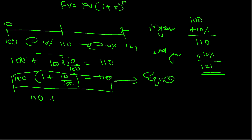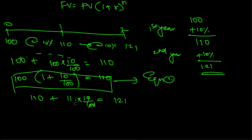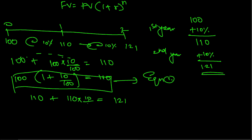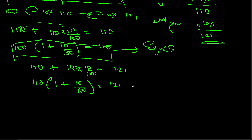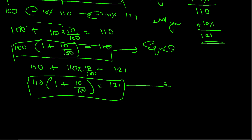Now for the second year, from 110 I will get 10 percent, so 110 into 10 percent gives 11, and 110 plus 11 comes to 121. Taking the common factor out: 110 into 1 plus 10 by 100 is equal to 121. I will keep this as Equation 2.